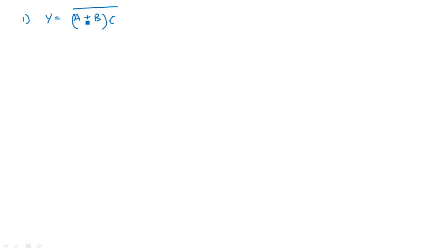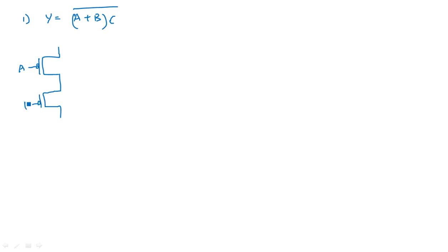A plus B — whichever is in the bracket, we need to accomplish that. A plus B means it is a series connection for the PMOS transistors. So the PMOS transistors A and B must be in series, and C must be in parallel with these two.